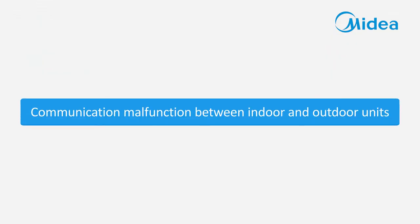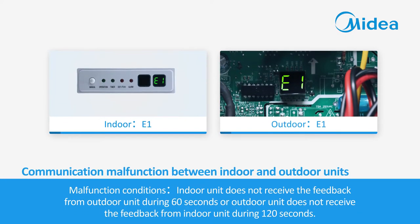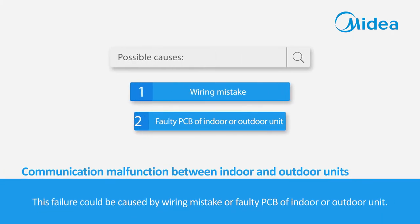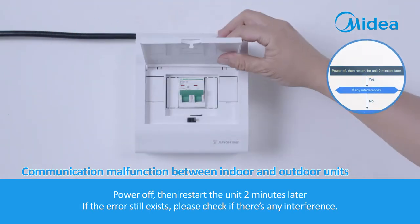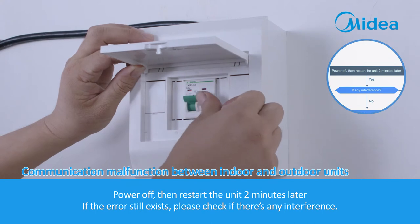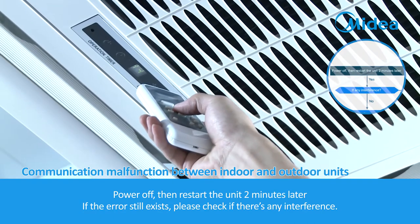Communication malfunction between indoor and outdoor units. Malfunction conditions: indoor unit does not receive feedback from the outdoor unit during 60 seconds, or outdoor unit does not receive feedback from the indoor unit during 120 seconds. This failure could be caused by wiring mistake, faulty PCB, or faulty indoor or outdoor unit. Troubleshooting: power off, then restart the unit two minutes later. If the error still exists, please check if there is any interference.